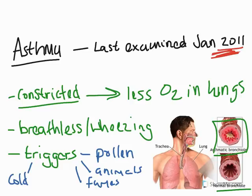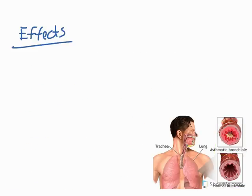Another factor that can cause asthma is chemicals — things such as cleaning products. We know that chlorine in swimming pools can have the tendency to trigger asthma attacks, so it is very relevant to the sporting environment.